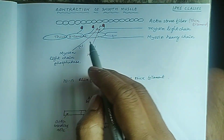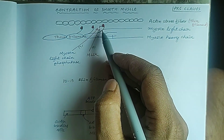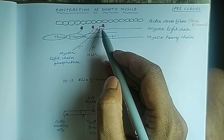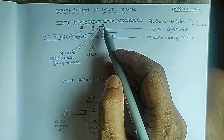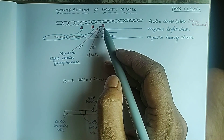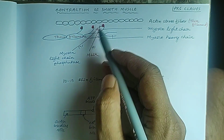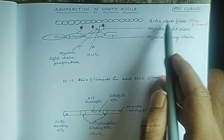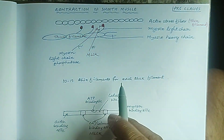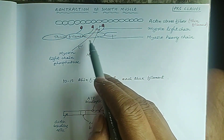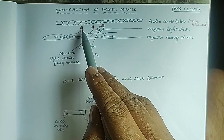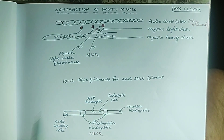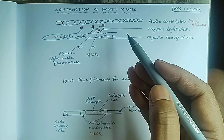The light chain of myosin is phosphorylated, and because of that phosphorylation, energy is available. Because of that energy, myosin binds with actin. There are 10 to 15 thin filaments — that is, actin stress fibers — for each thick filament. When actin and myosin bind, contraction of the smooth muscle occurs.